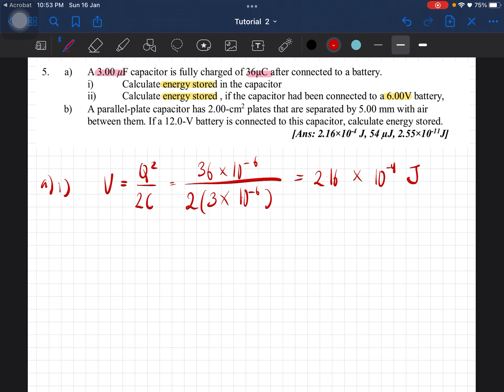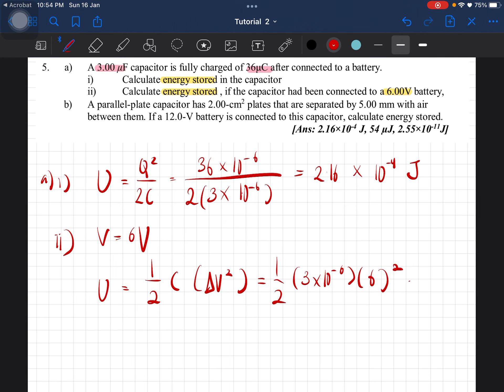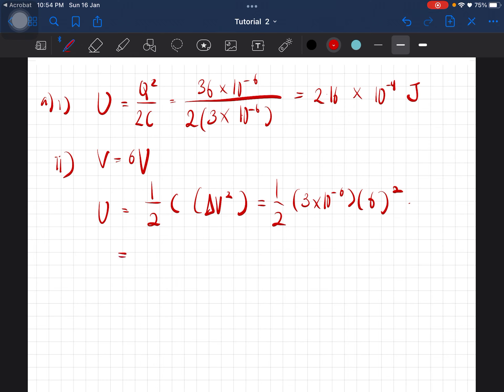So this is the energy stored. This is not V, this is U. And then for question ii, if it is connected to a 6 volt battery, we will be using half C delta V squared. So this is gonna be half times 3 times 10 to the negative 6 times 6 volts squared. You should then get the value of energy stored to be equal to 54 microjoules.